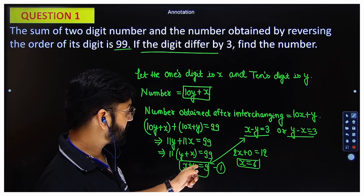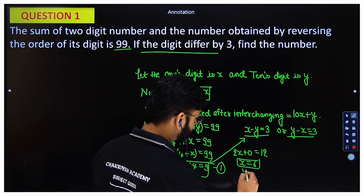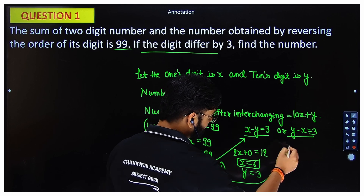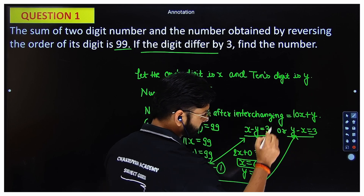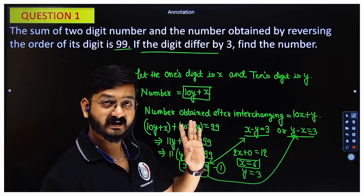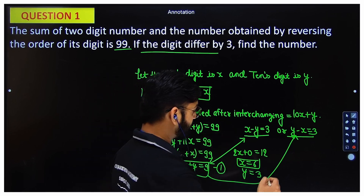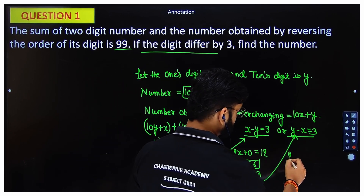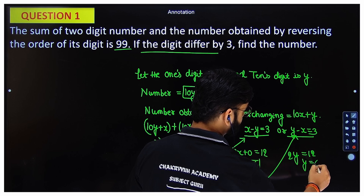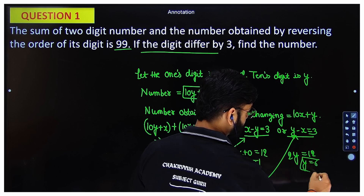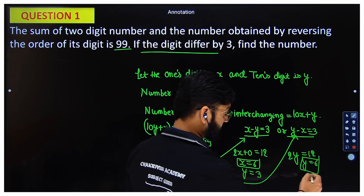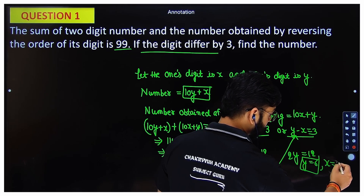Now for case two: y minus x equals 3, and x plus y equals 9. Adding both equations: x and minus x cancel, giving 2y equals 12 — wait, 2y equals 10, so y equals 6. Correct. If y is 6, then x equals 3.